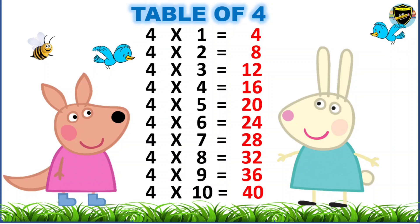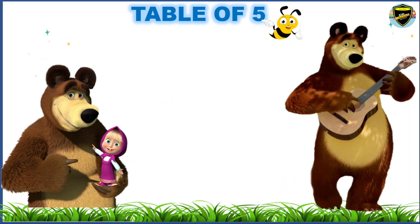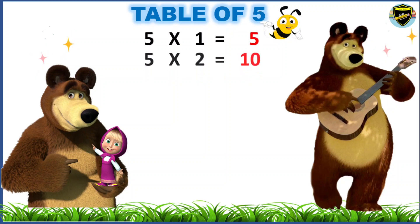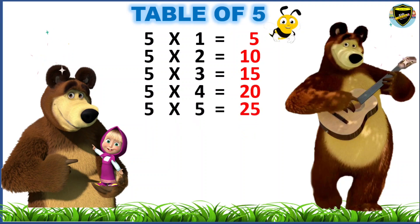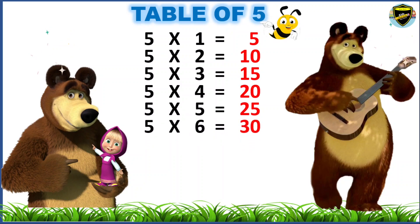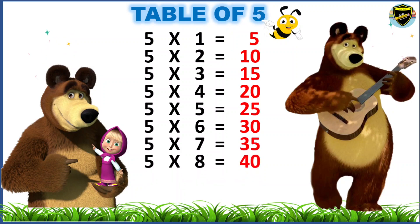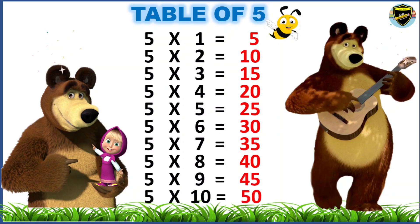Now, let's learn the table of 5. 5 8s are 40. 5 9s are 45. 5 10s are 50.